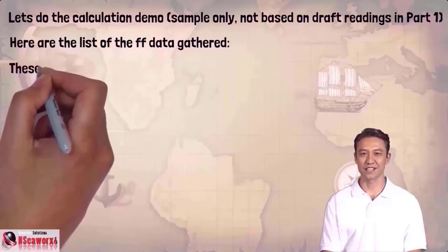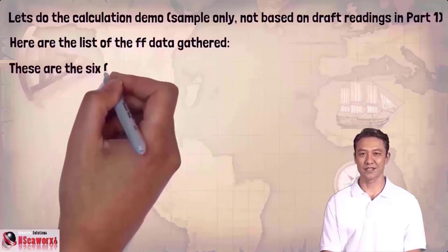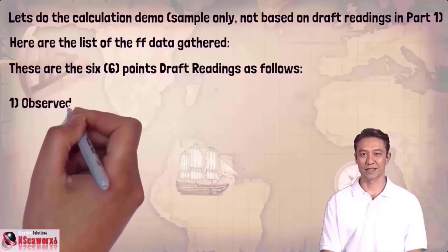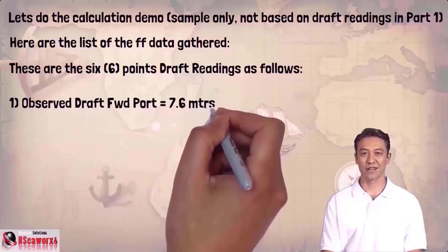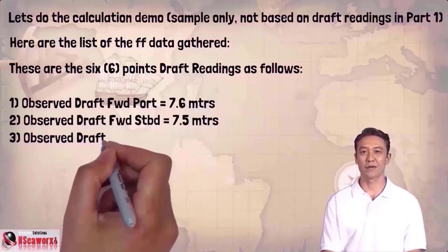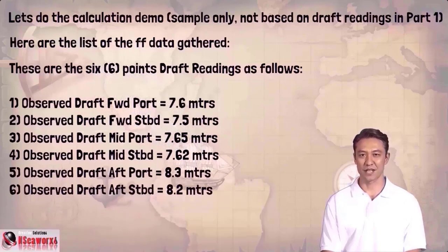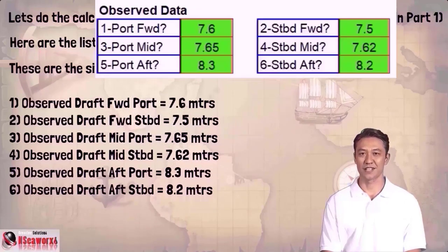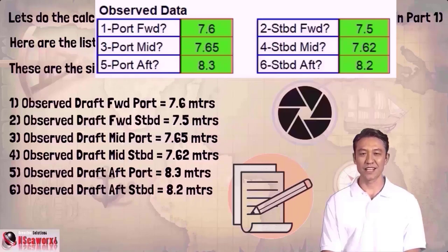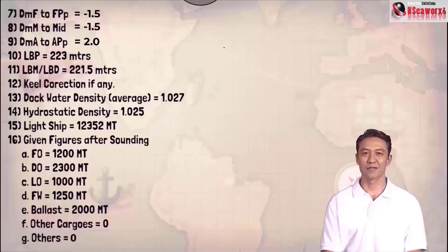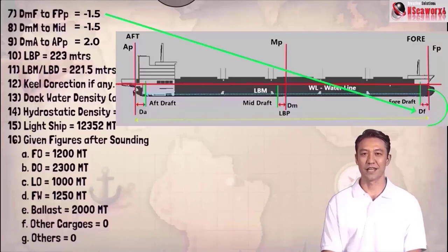Here are the lists of the following data gathered. These are the six-point draft readings. Number 1: observed draft forward port equals 7.6 meters. Number 2: observed draft forward starboard equals 7.6 meters. List down all these in your notes and proceed with the calculation. Here are the remaining values required to complete the computation.